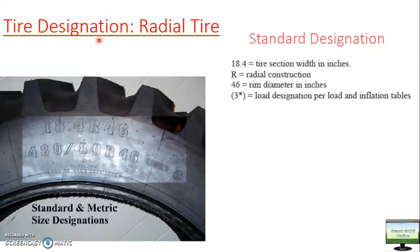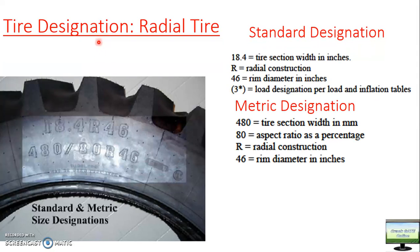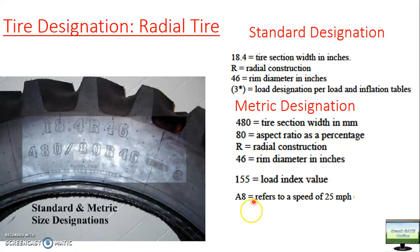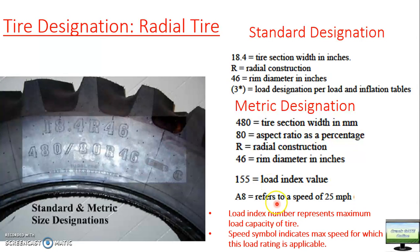Moving ahead, in this area of the designation something is written as 155 A8. This 155 is the load index value and A8 refers to the speed at this load index. The load index number represents the maximum load capacity of the tire as given by the tire manufacturer. The speed symbol — A8, A9 — represents the maximum speed at which this load index is applicable.